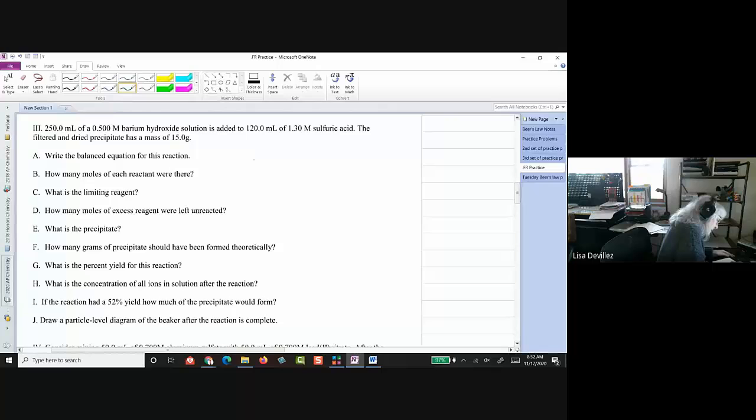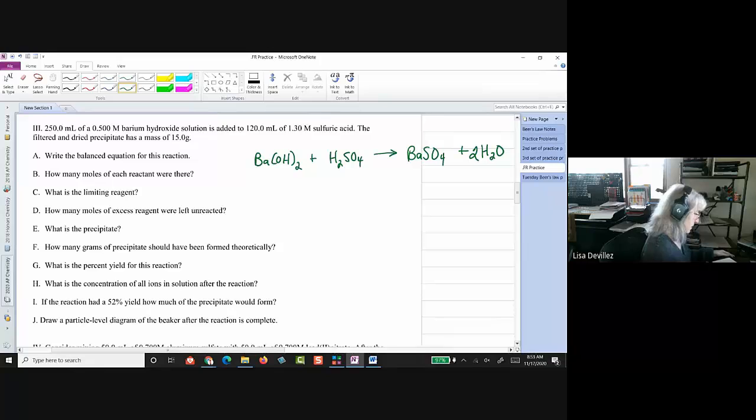So, I have barium hydroxide and sulfuric acid. And that's going to give me barium, oh, I am getting a precipitate here. Barium sulfate plus water. Okay. And that's two and two. So, I need a two on the water.